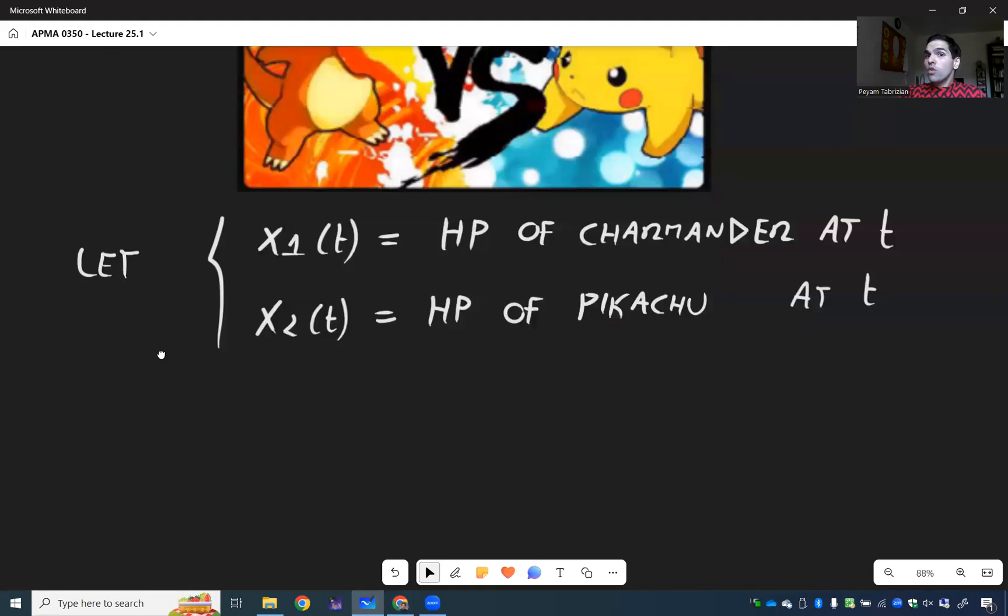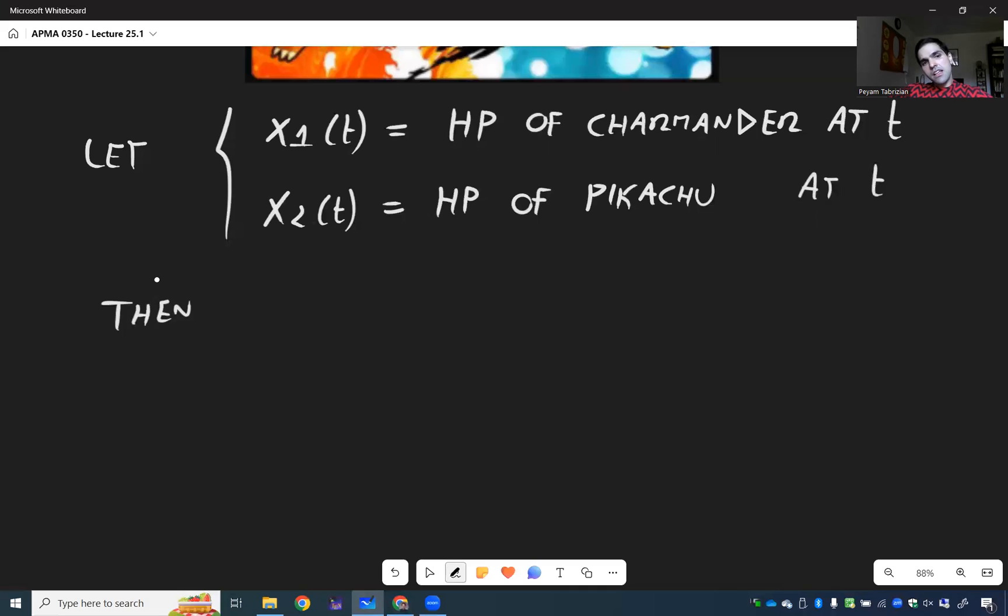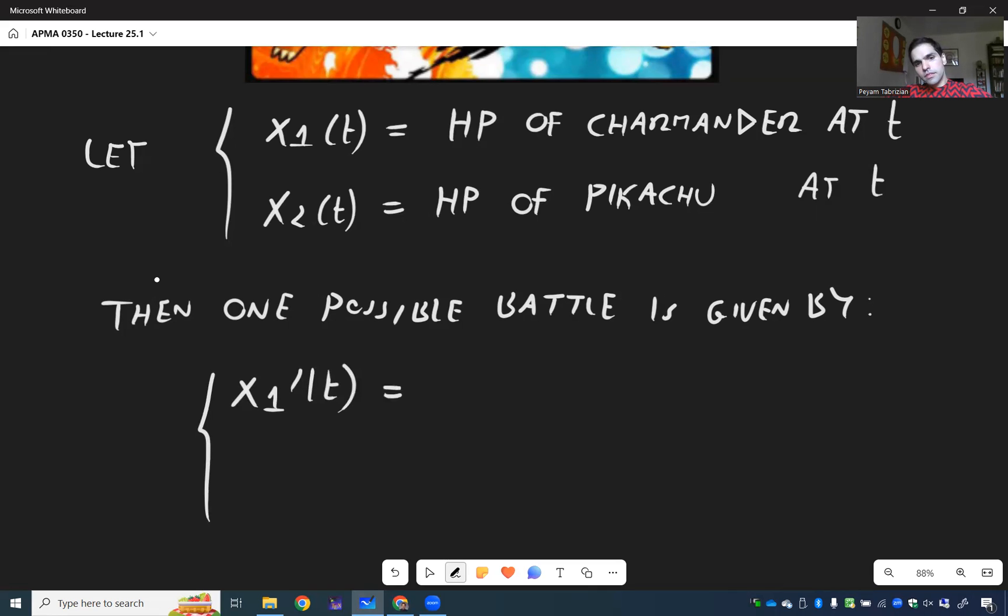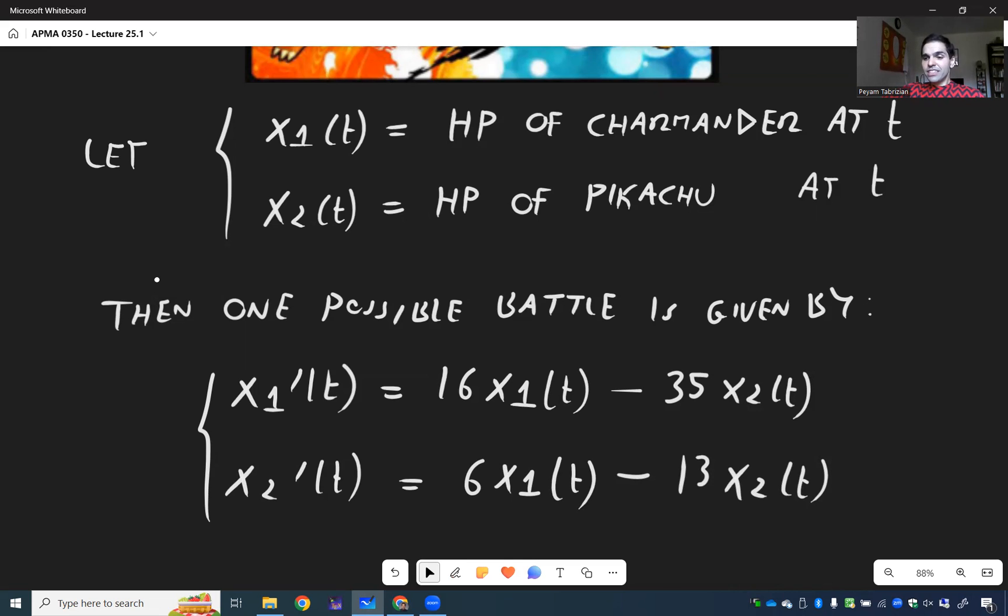Then it turns out one possible battle is given by the following: X1 prime is 16 X1 minus 35 X2 and X2 prime is 6 X1 minus 13 X2.